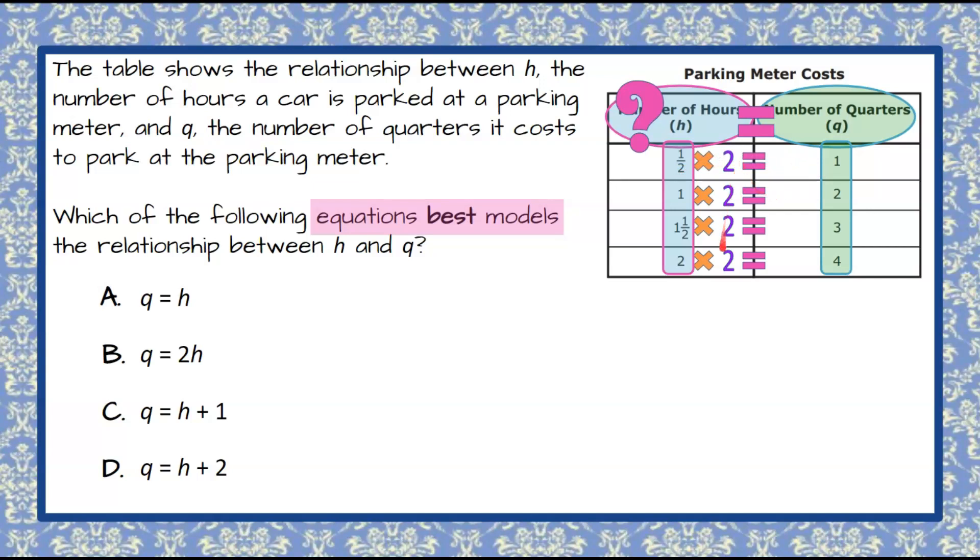So we can see that in each of these four values given to us for H, that if we multiply them by two, we get our Q value. So now when we go to write that, we're going to say, instead of a number, we have H. We're going to multiply by two, and it's going to equal our Q.